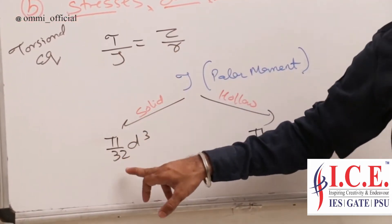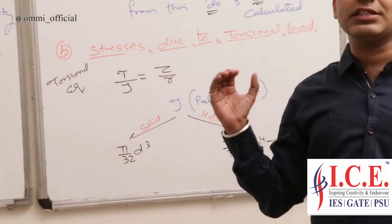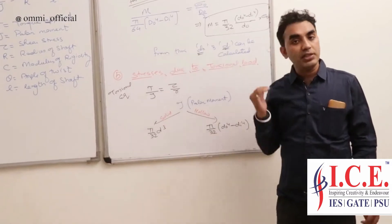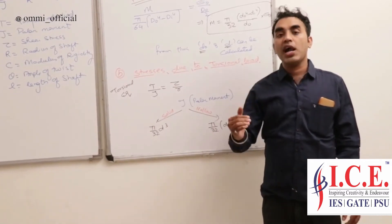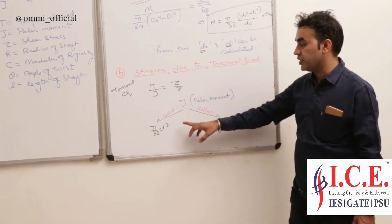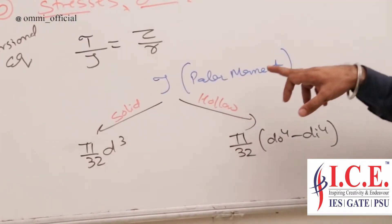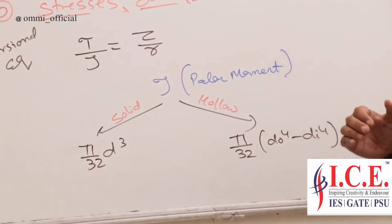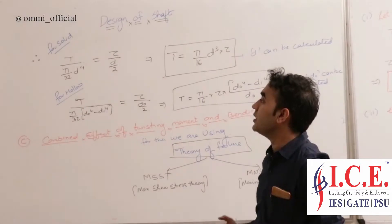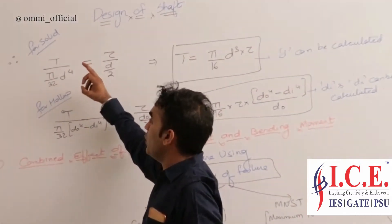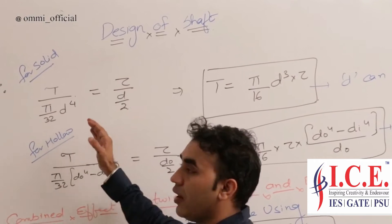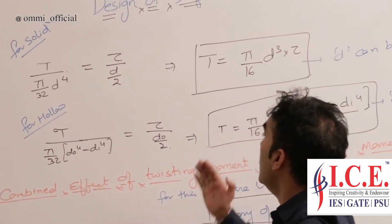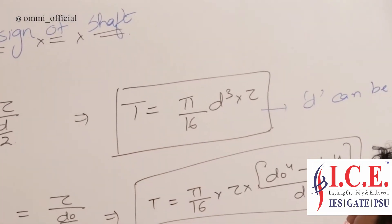For the solid shaft, the section modulus in torsion is pi by 32 times d cubed. This is the ratio of I upon R — I is pi by 64 times d to the power 4, and R is d by 2 — giving pi by 32 d cubed. For hollow, it is pi by 32 times (d_o^4 minus d_i^4). Putting values for the solid: T upon (pi by 32 d cubed) equals tau times (d by 2). The final equation for the solid is T equal to pi by 16 times d cubed times tau.